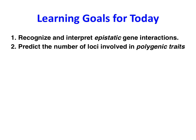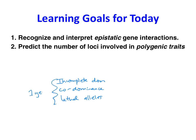In a previous video about modified Mendelian genetics, we talked about single-gene modifications to typical Mendelian inheritance. That included incomplete dominance, co-dominance, and also lethal alleles. These are all one-gene versions of modifications to Mendel.